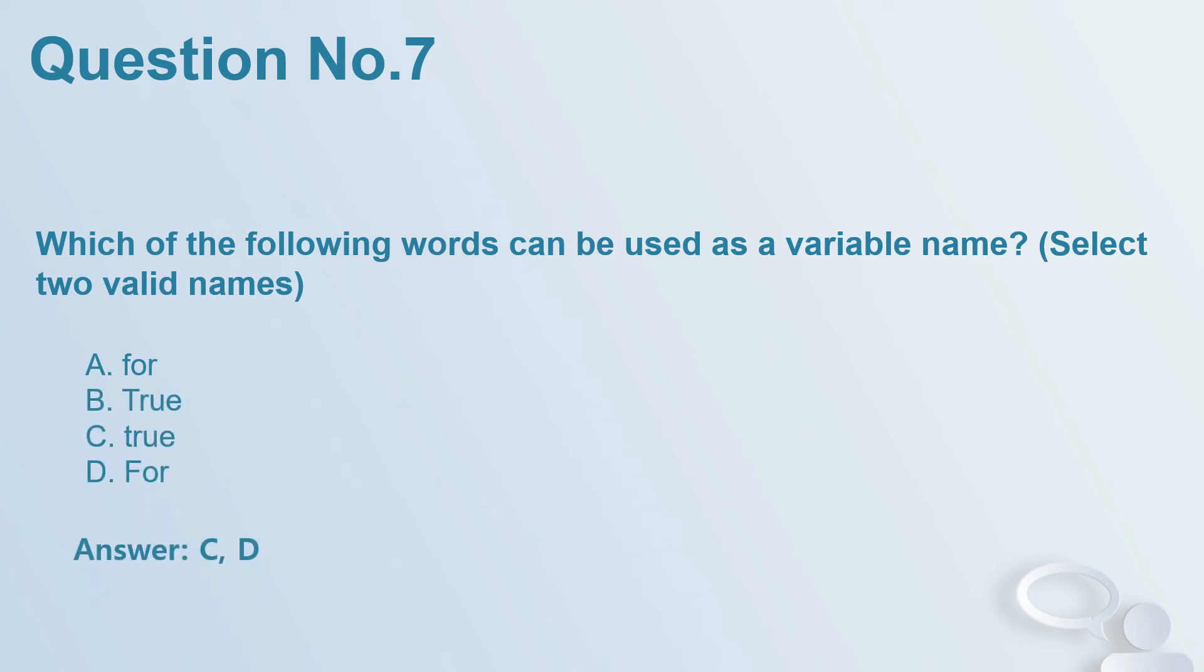Question number 7. Which of the following words can be used as a variable name? Select two valid names. A. for. B. True. C. true. D. For. Answer: C, D.